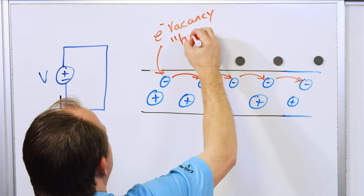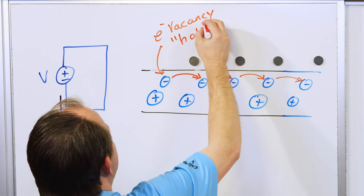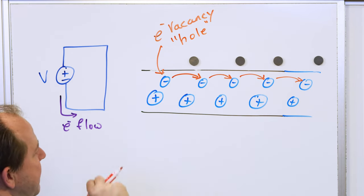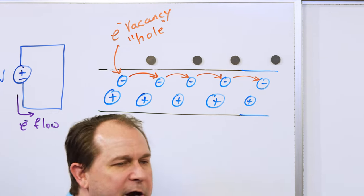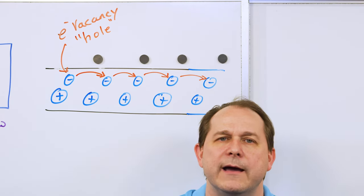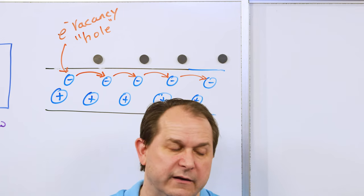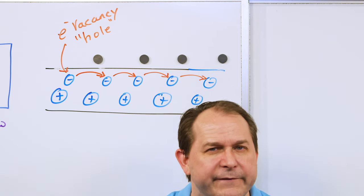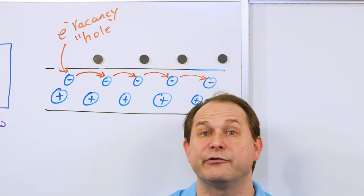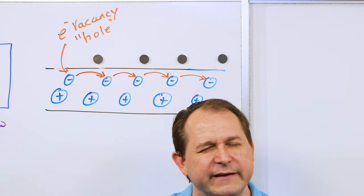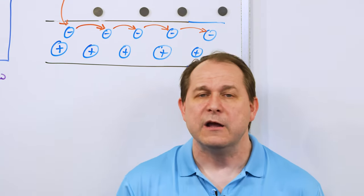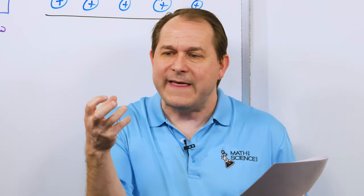One thing I want to tell you though: right at this point, once this one moves over, here is an electron vacancy — you might call it a hole. Why do we call it a hole? Because once the electron's gone, there's like a missing electron there, almost like a hole that you've dug. The electric force is very, very strong — it's millions and millions of times stronger than gravity. As soon as there's a hole in place...